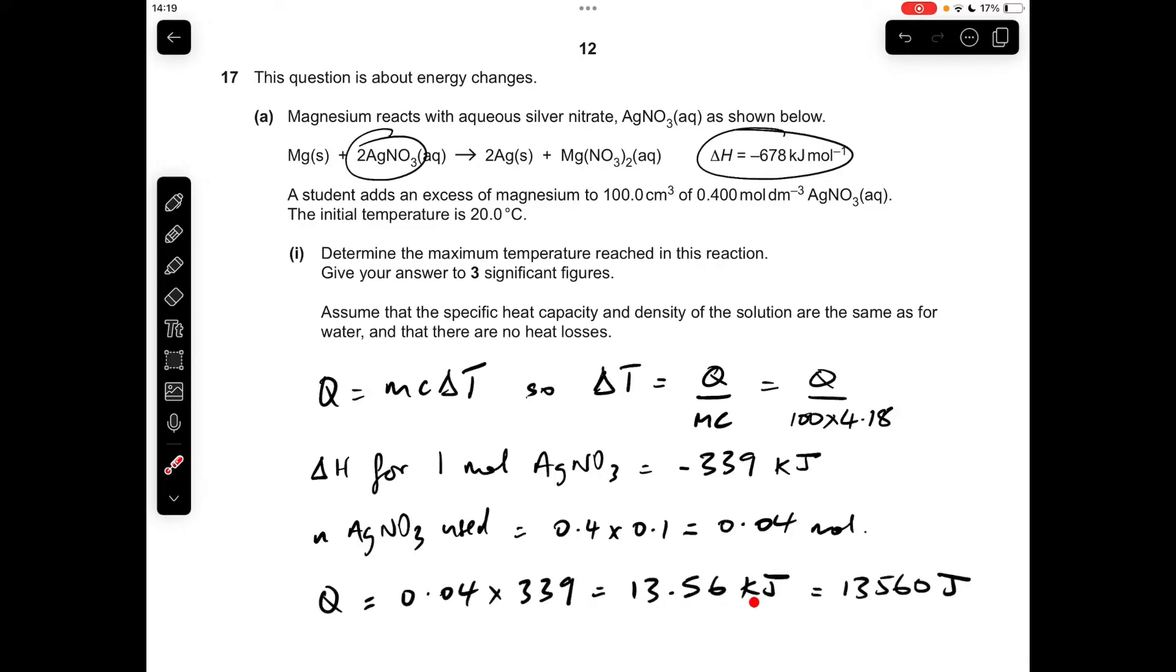That comes out at 13.56 kilojoules, but remember in the Q = MC ΔT equation, Q is in joules, so we need to multiply by a thousand to get that into joules.